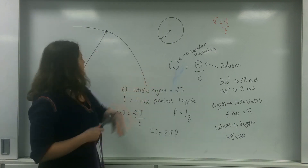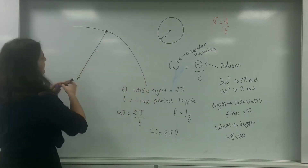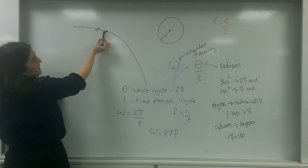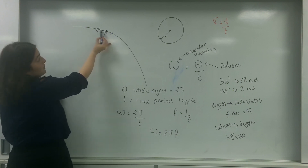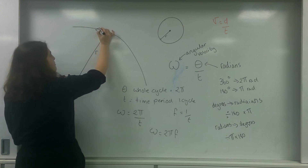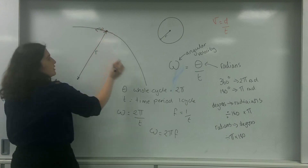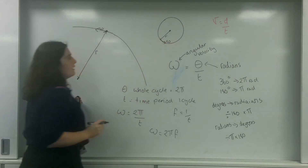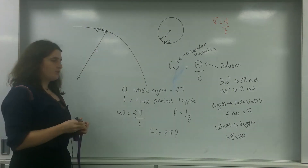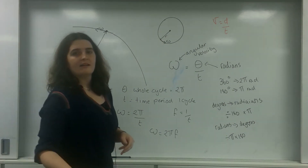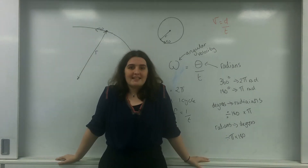So the idea of angular velocity is this: here's my object, and it moves around my circle. The angle it sweeps out — the velocity going around the circle — is angular velocity. It's the rate at which the angle is swept out as the object moves around the circle.